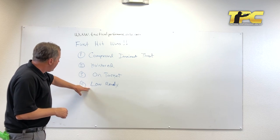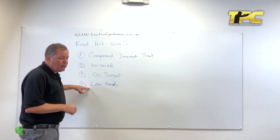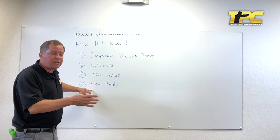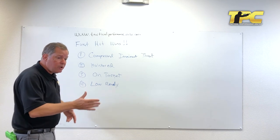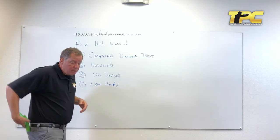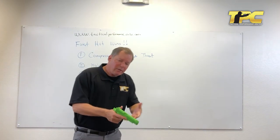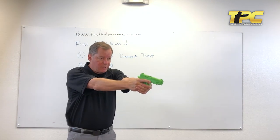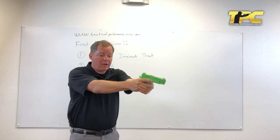So the least common one that we use is called low ready. This is common in law enforcement and military, especially quals, so we do train people how to use them. Low ready technically is described as the gun's at 45 degrees from the eyeline.